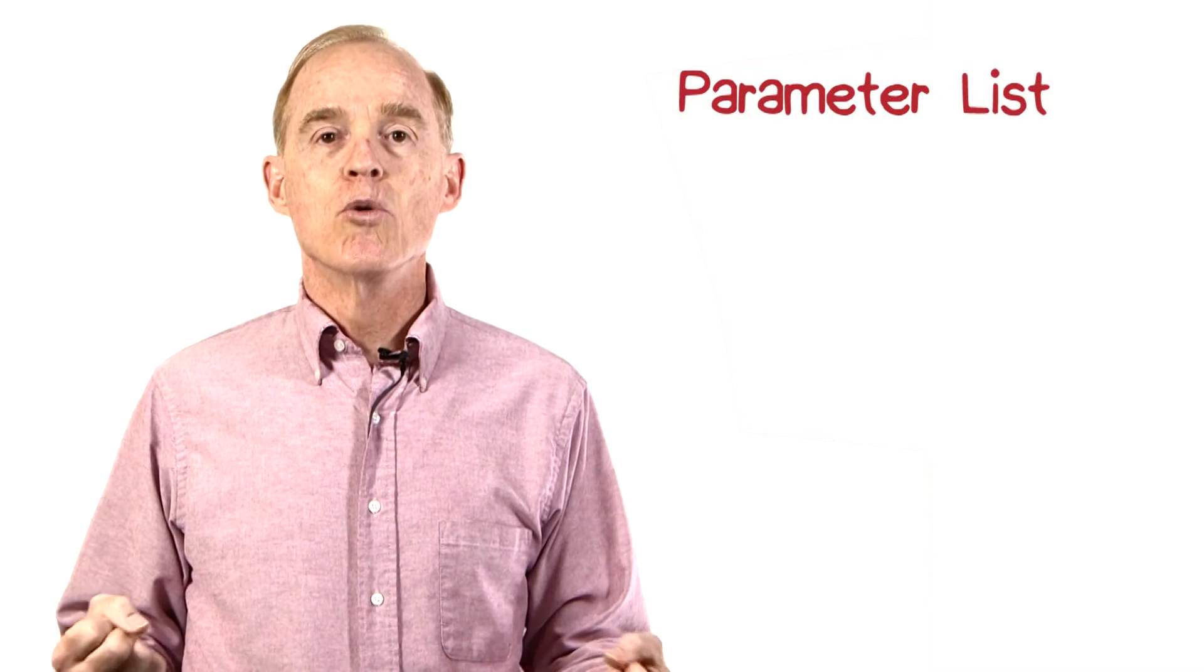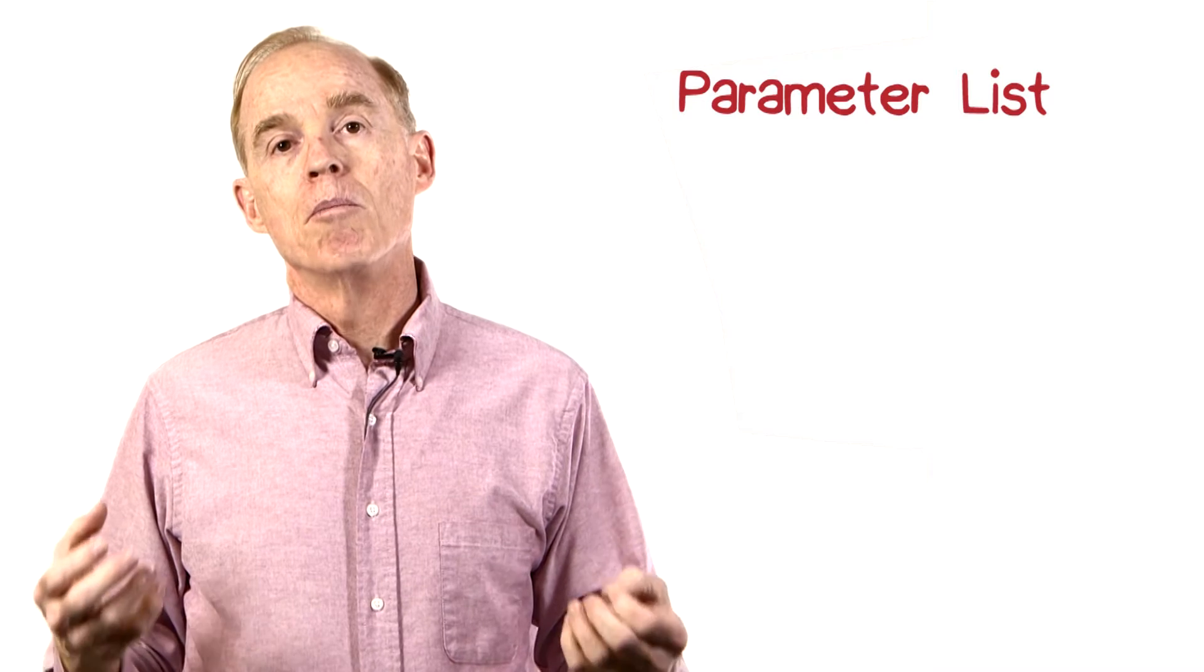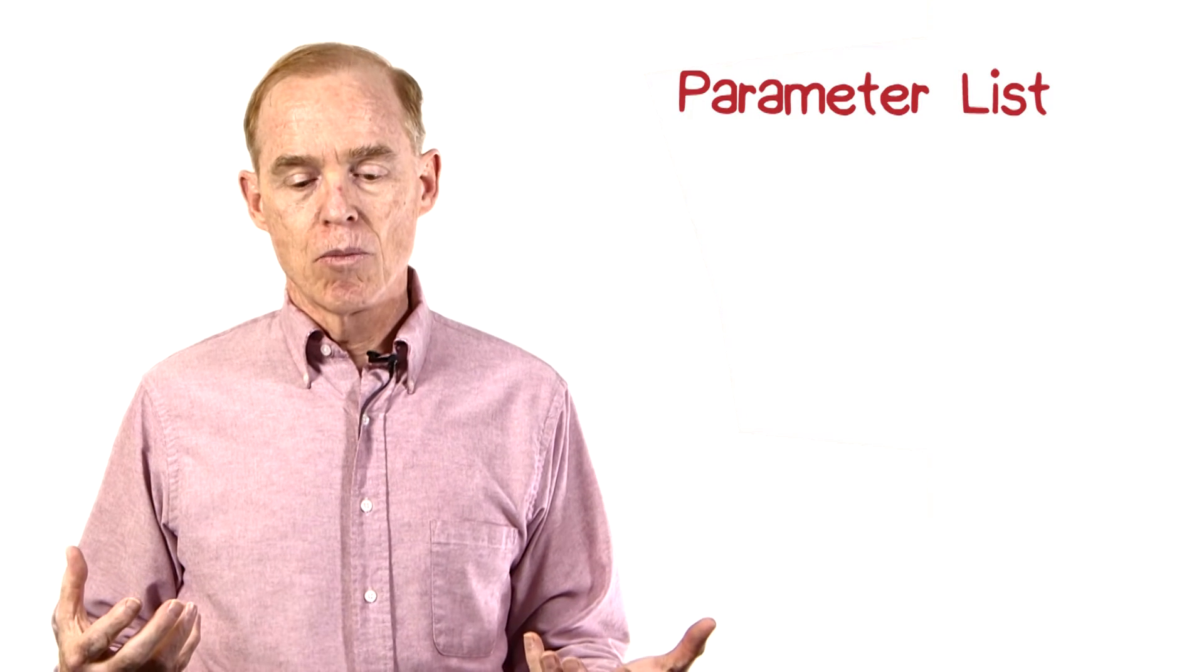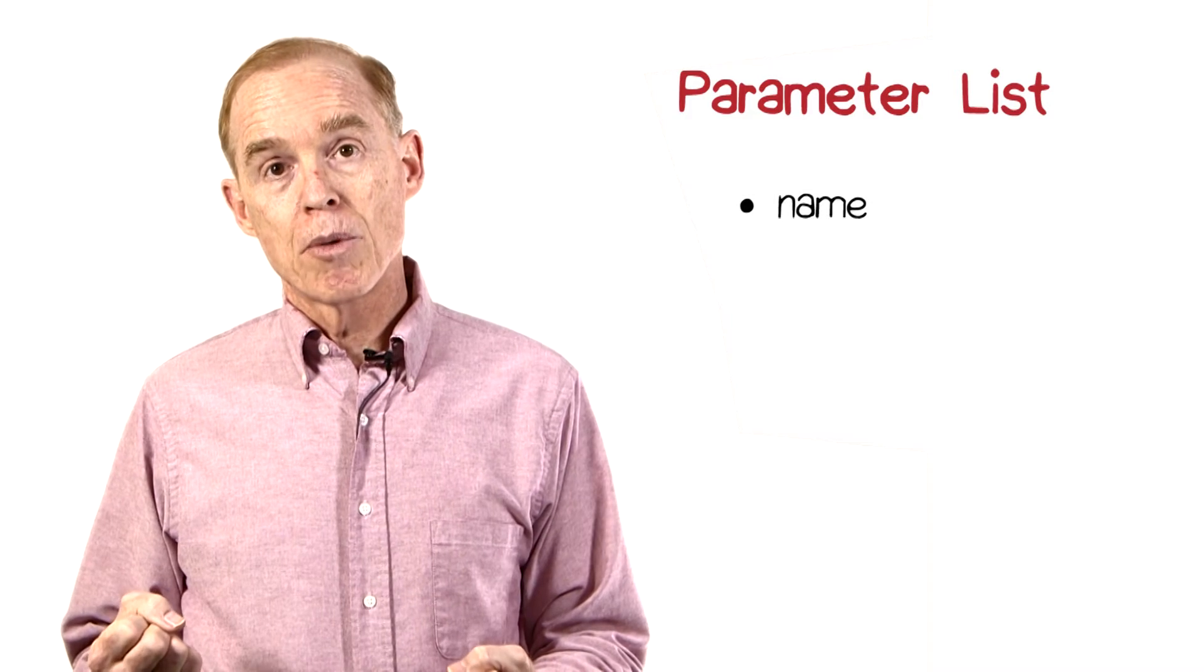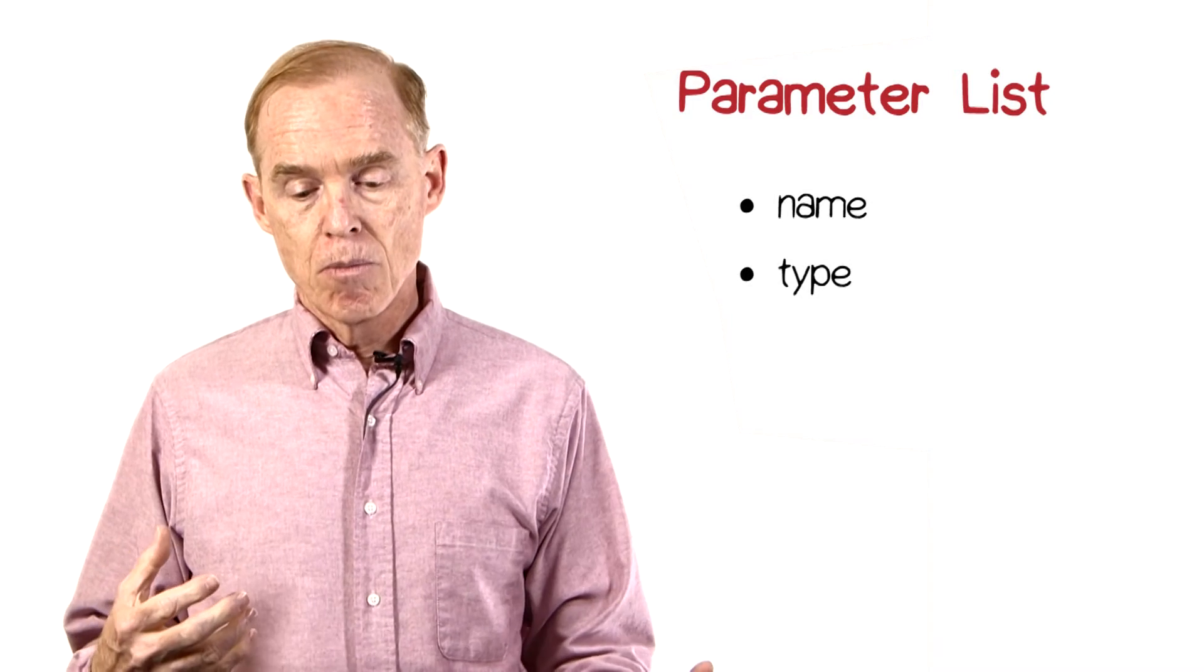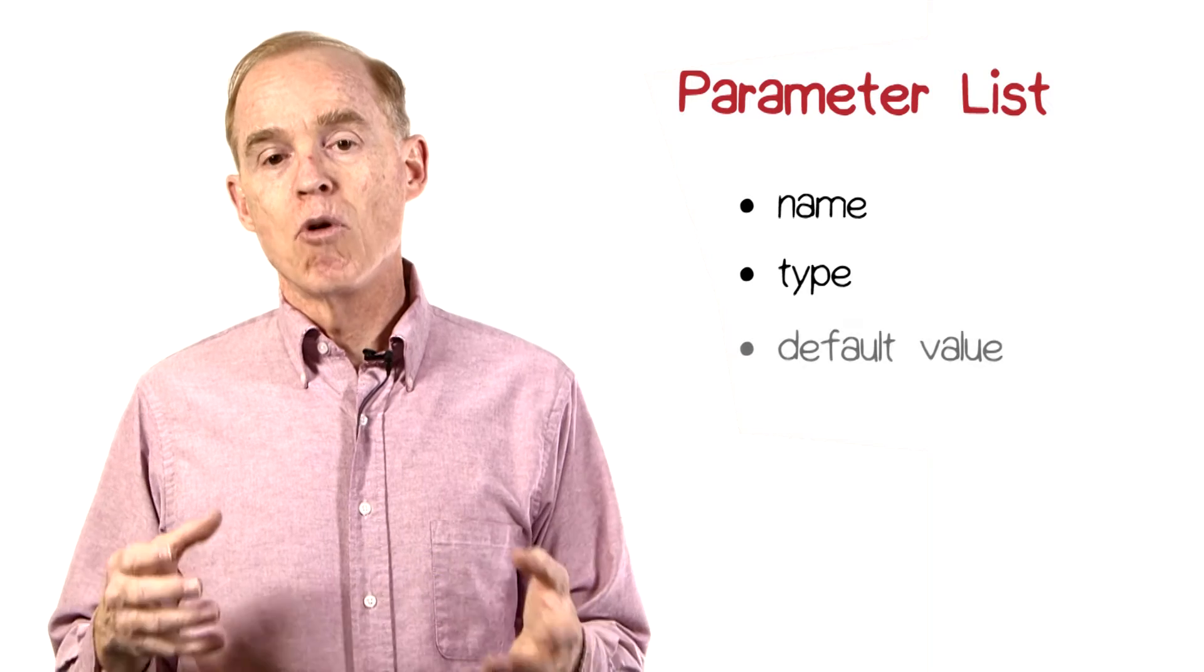Then there's a list of parameters, just like you would have if you were describing some method within an object-oriented language. The parameter list includes a name of the parameter, its type, and you may express a default value.